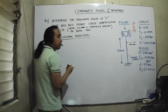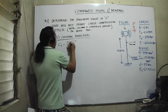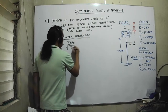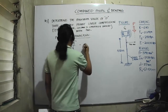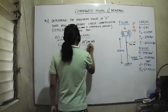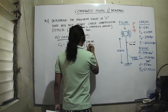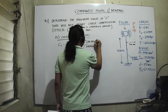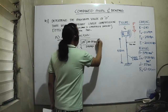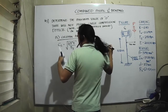The compression index Cc is equal to the square root of 2π²E divided by Fy. Substituting: 2π² times 200,000 MPa divided by 248 MPa — the units cancel out — giving a unitless value of Cc = 126.169.